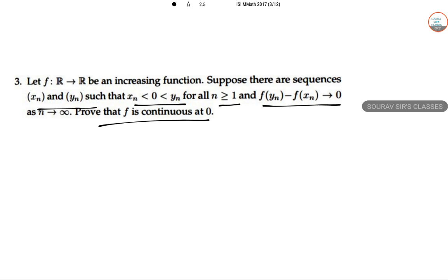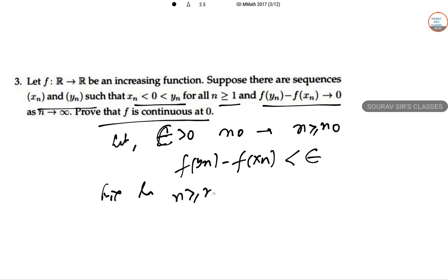Let ε > 0. There exists n₀ such that for n ≥ n₀, f(yn) - f(xn) < ε. Now for such n, fixing n ≥ n₀, we take δ = min(yn₀, -xn₀) > 0.